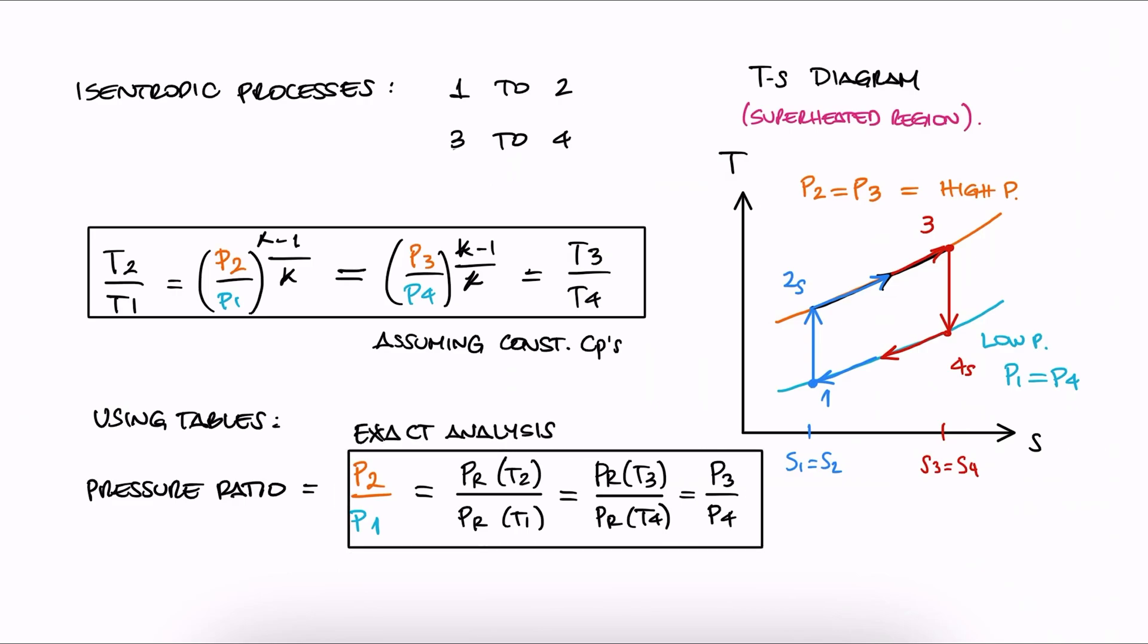Everything I showed here today is for the idealized Brayton cycles. This is because we are assuming isentropic compressors and turbines. In reality, we don't have isentropic compressors and turbines.